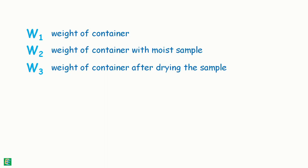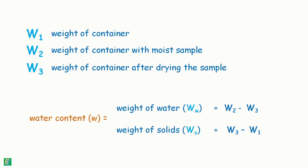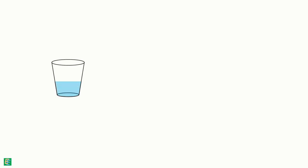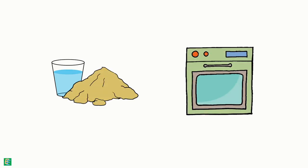From these weights we can know weight of water as weight of container with moist sample minus weight of container with dry sample, and weight of solids as weight of container after drying the sample minus weight of empty container. And we know that by definition, water content is weight of water divided by weight of solids. So this is how we determine the water content of any soil sample using an oven. Thank you.